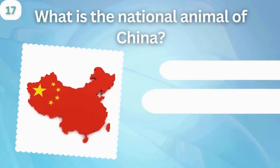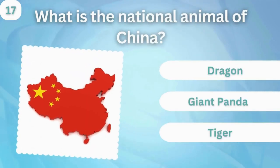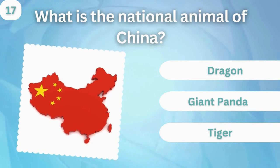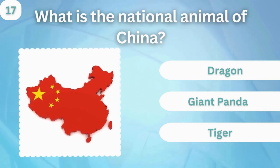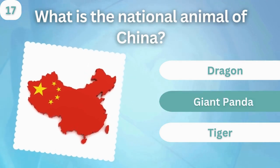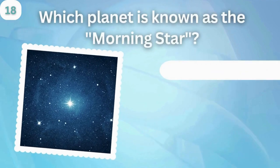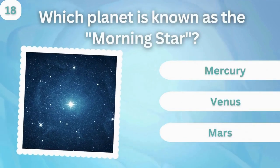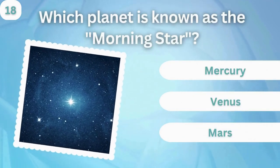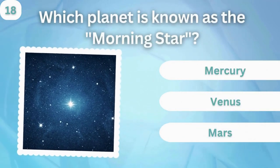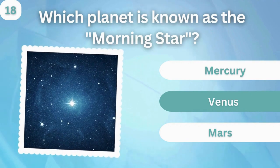What is the national animal of China? Dragon, giant panda, or tiger? Giant panda. Which planet is known as the Morning Star? Mercury, Venus, or Mars? Venus.